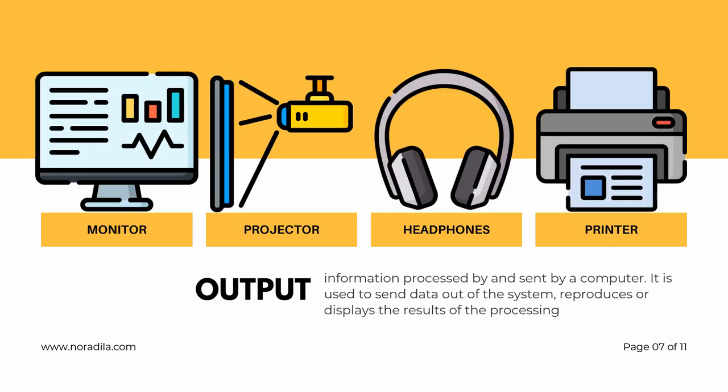An output, on the other hand, is information processed by and sent by a computer. An output device is used to send data out of the system and reproduces or displays the result of the processing. There are four basic types of output on a computer: text, audio, graphics, and video.